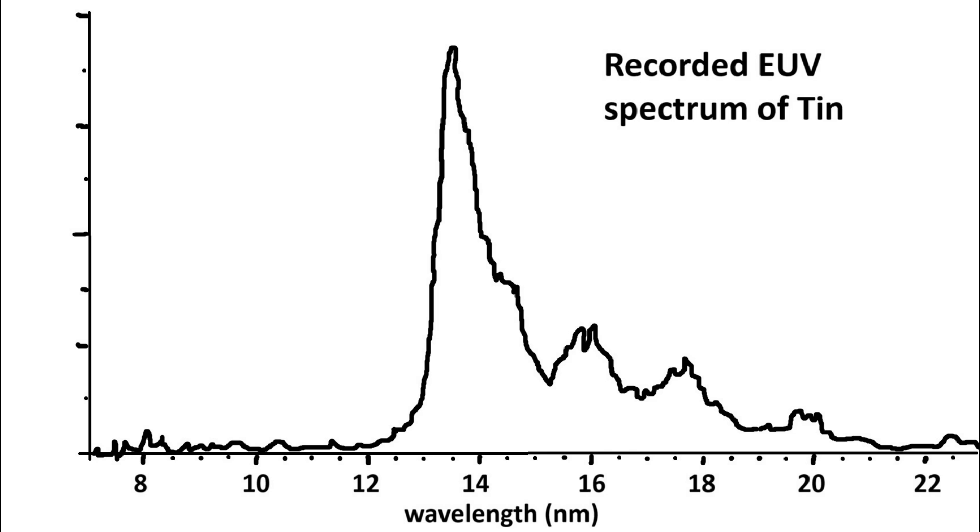While lithium, tin, and xenon all meet these requirements, tin was ultimately chosen because it has the highest conversion efficiency and is the most practical to work with. The debris created from tin is much easier to control than other options, and it is easiest to shoot molten beads of it consistently at 50,000 times a second.